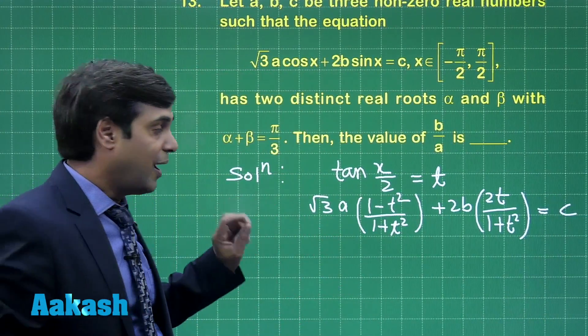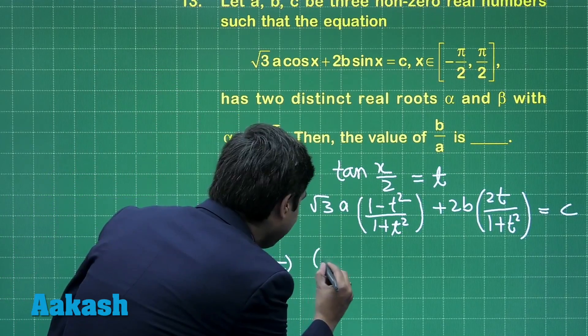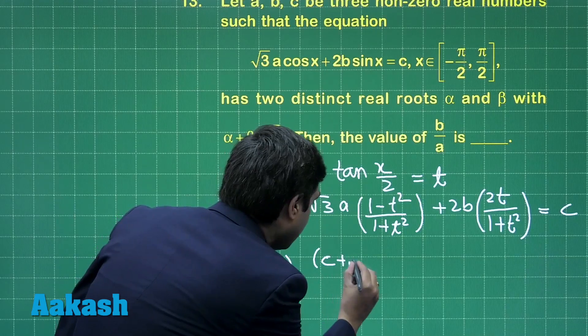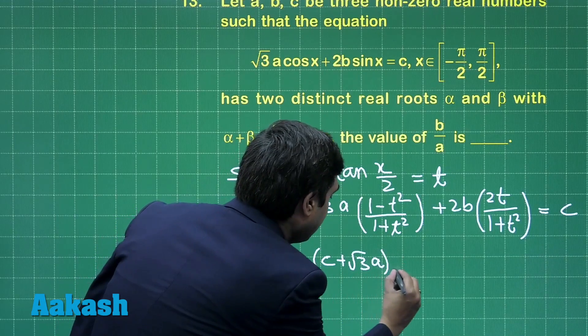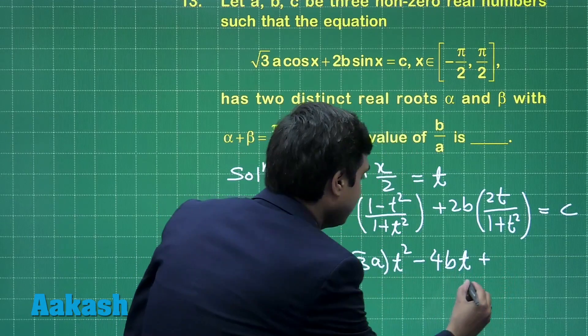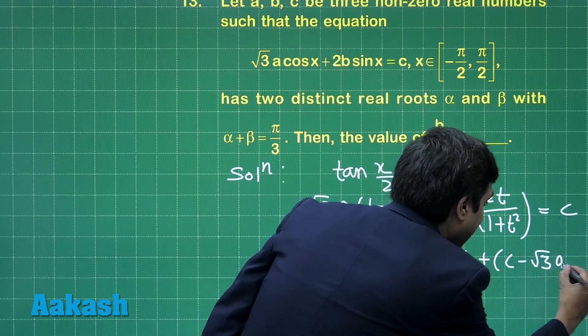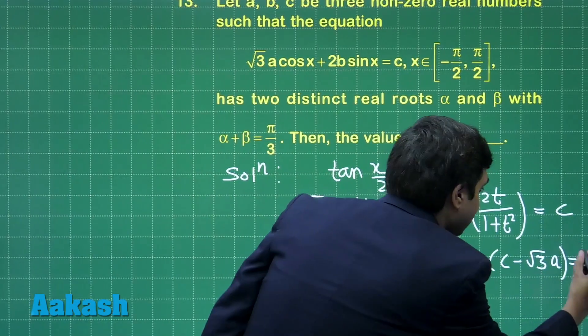we obtain (c + √3·A)t² - 4Bt + (c - √3·A) = 0.